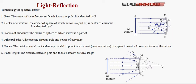Fourth is principal axis. A line passing through the pole and center of curvature is known as principal axis. This line is the principal axis.